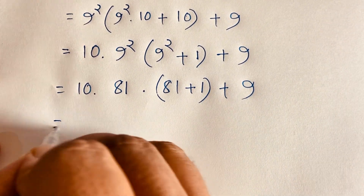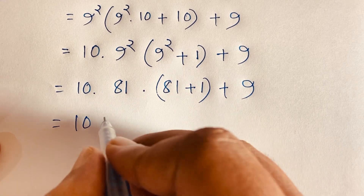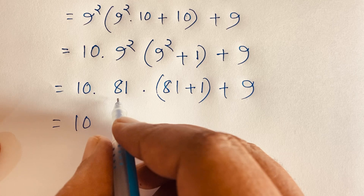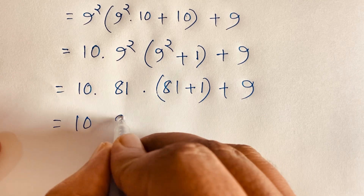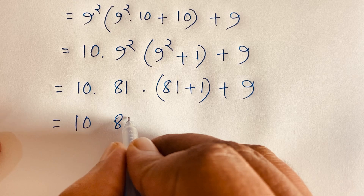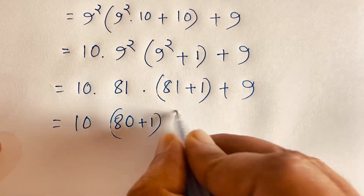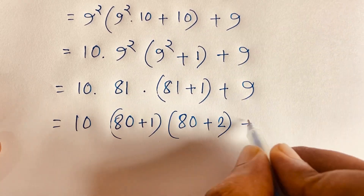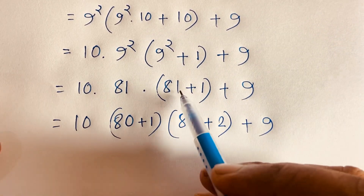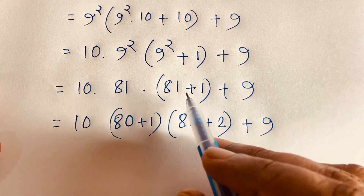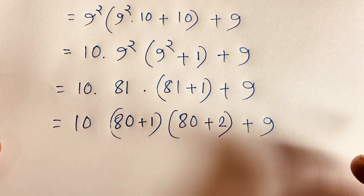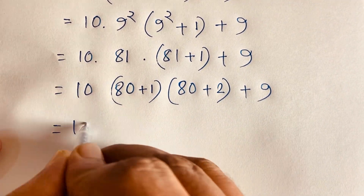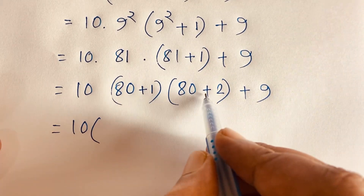Now you can see easily: 10 and 81, so 81 plus 1 equals 82. Then it will be 80 plus 2, which is 82. So now I have 10 multiplied by 82, plus 9.